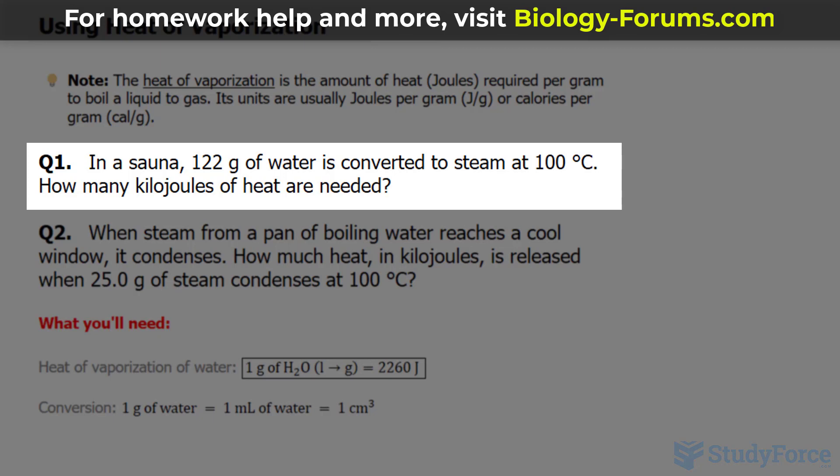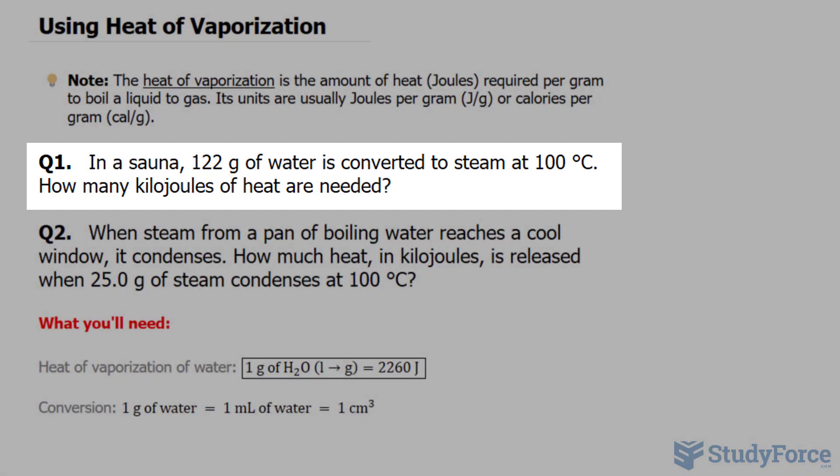Question 1 reads: in a sauna, 122 grams of water is converted to steam at 100 degrees Celsius. How many kilojoules of heat are needed to do this?